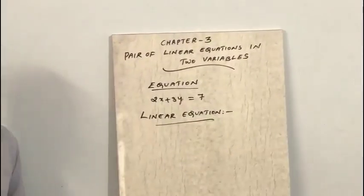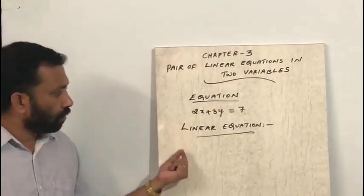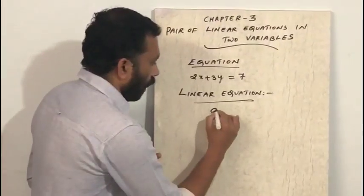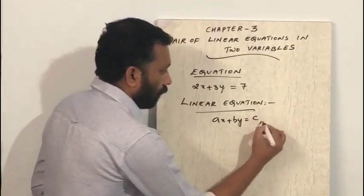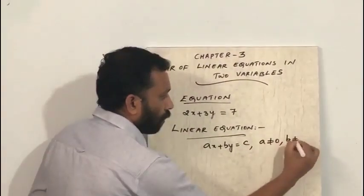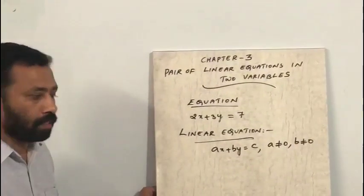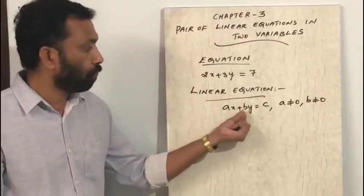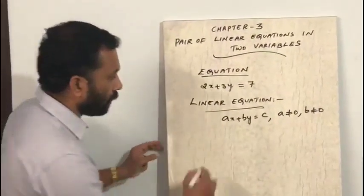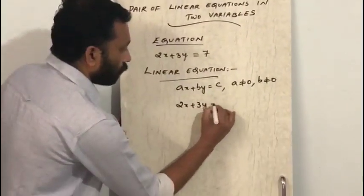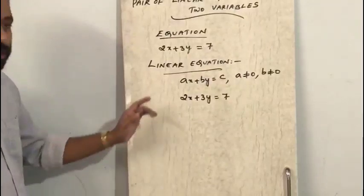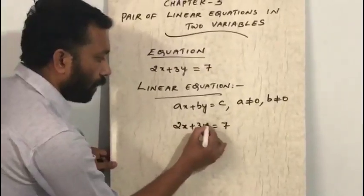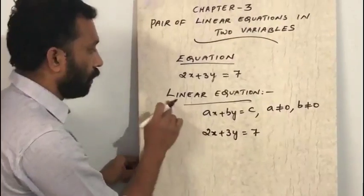What is a linear equation? An equation of degree 1 is called a linear equation. The general form is ax plus by equals c, where a is not equal to 0, b is not equal to 0, and a, b, c are real numbers. For example, 2x plus 3y equals 7 is a linear equation in two variables because the power of each variable is 1.